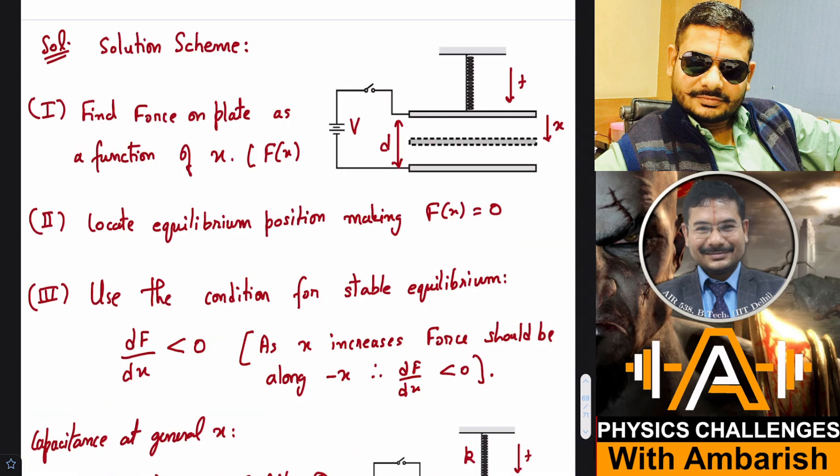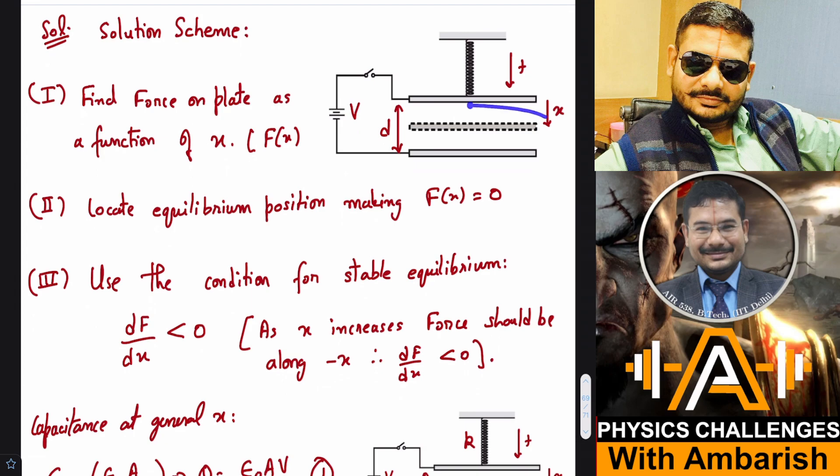What's the solution scheme? Let's assume the plate gets into equilibrium at some displacement x from the initial position. My idea would be to find the force function as a function of x. When the plate comes down through a distance x, there is an electrostatic force attracting downwards—that's in the positive x direction, I've taken downward as positive—and there will be a spring force acting in the negative x direction. So the resultant of two forces, the net force as a function of x. Now where will the equilibrium be? We can locate the equilibrium by equating the force function to zero.